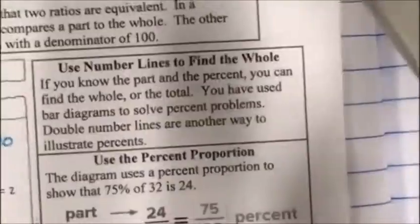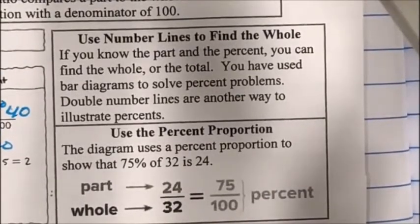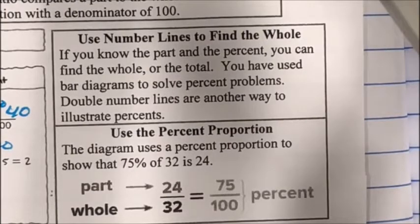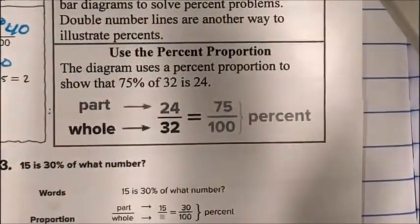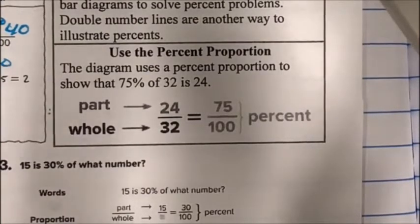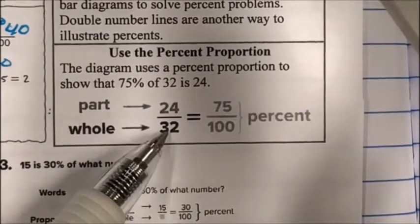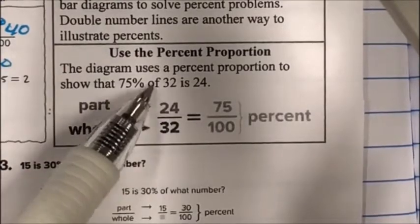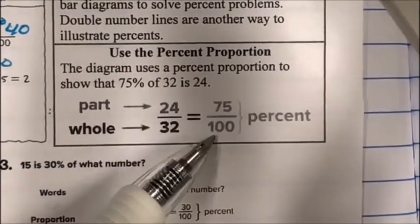You can use number lines to find the whole if you know the part and the percent. You've used bar diagrams to solve percent problems; double number lines are another way to illustrate percents. You can also use the percent proportion, which I recommend. The diagram shows that 75% of 32 is 24: the word 'of' signals your whole (32) and 'is' signals your part (24), giving 24 over 32 equals 75 over 100.